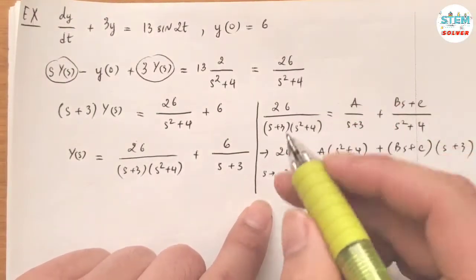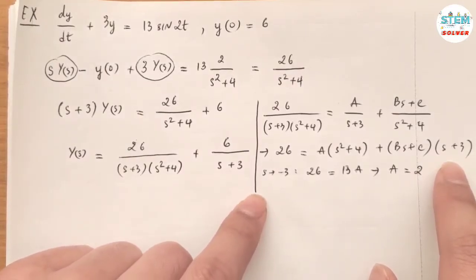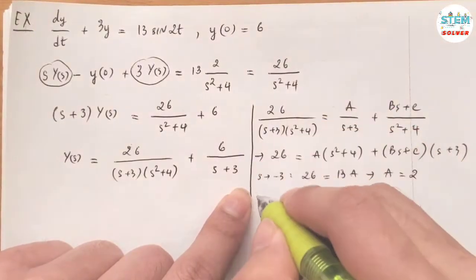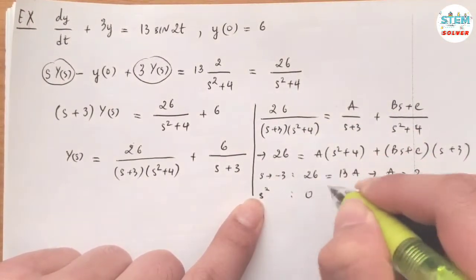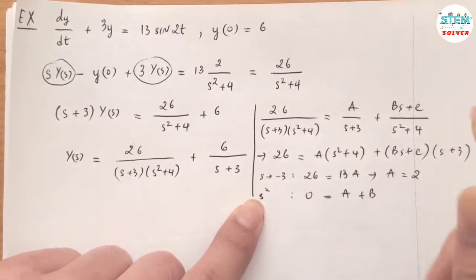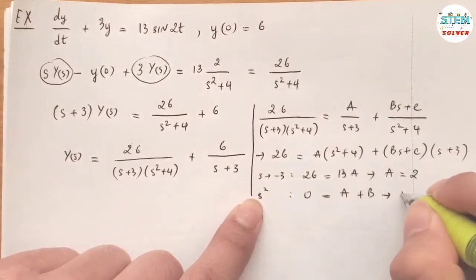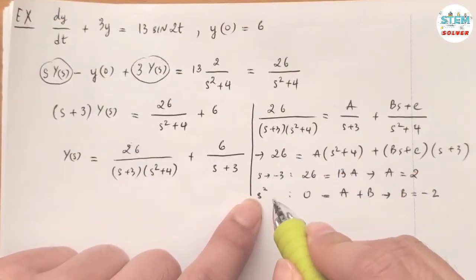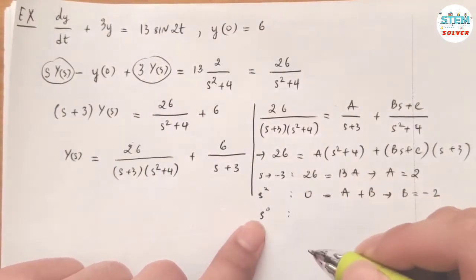There are no more simple linear factors to use the limit method on, so we fall back to equating coefficients. Looking at the leading coefficient of s squared: on the left side I have zero, and on the right side I have A plus B times s squared. Since I know A equals 2, I can find B easily, which gives B equals negative 2.